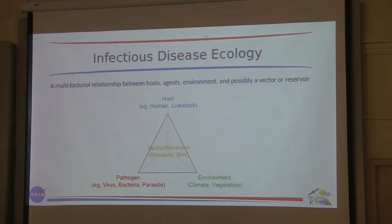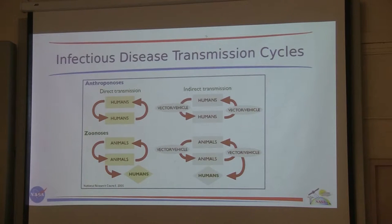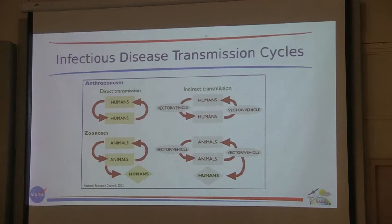For West Nile virus, it affects humans but is also carried by birds, so the bird population is also important. We have to understand the ecology to create a model — are we looking at just a vector and a human population? Dengue and malaria are easier to model because the pathogen is either in a vector or human population. West Nile is also in the bird population — it's possible for West Nile to exist in a community even with no humans infected, so you can't just monitor humans or mosquitoes; the birds are very important too.